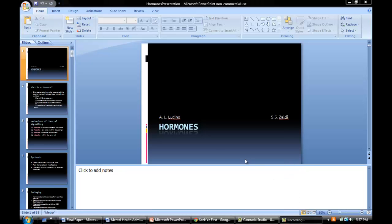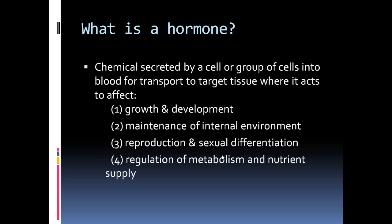Hello. Hi. Today we're going to be talking about hormones and how hormones influence the body. So, what is a hormone? First of all, a hormone is a chemical secreted by a cell or a group of cells into the blood. The effects of these hormones include growth and development, the maintenance of internal environment, reproduction and sexual differentiation, as well as the regulation of metabolism and the supply of different nutrients in the body.